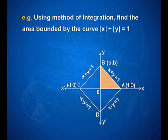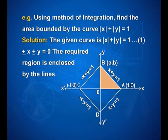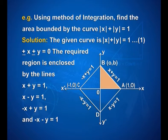Another example: using the method of integration, find the area bounded by the curve modulus of x plus modulus of y is equal to 1. As the given curve is |x| plus |y| is equal to 1, we can write plus or minus x plus or minus y is equal to 1. The required region is enclosed by the lines x plus y is equal to 1, x minus y is equal to 1, minus x plus y is equal to 1, and minus x minus y is equal to 1. In the figure, we have region AOB with point A at (1, 0), point B at (0, 1), and line AB as x plus y is equal to 1, and line BC as minus x plus y is equal to 1.